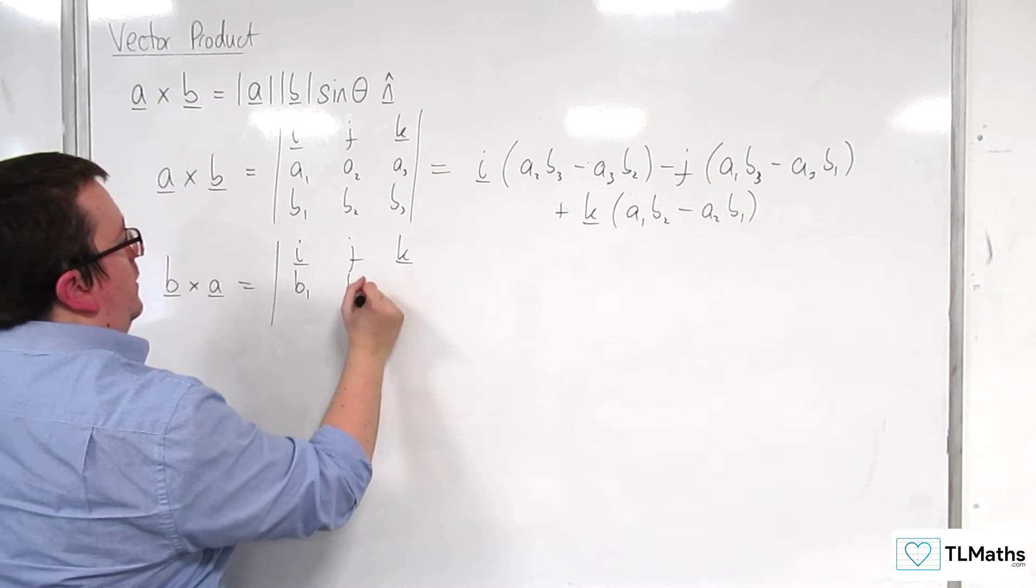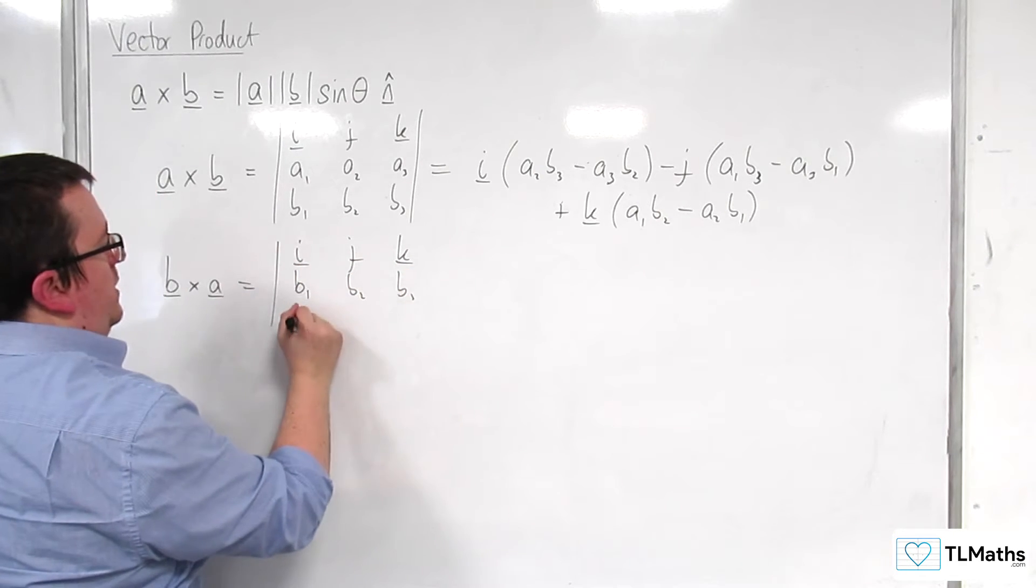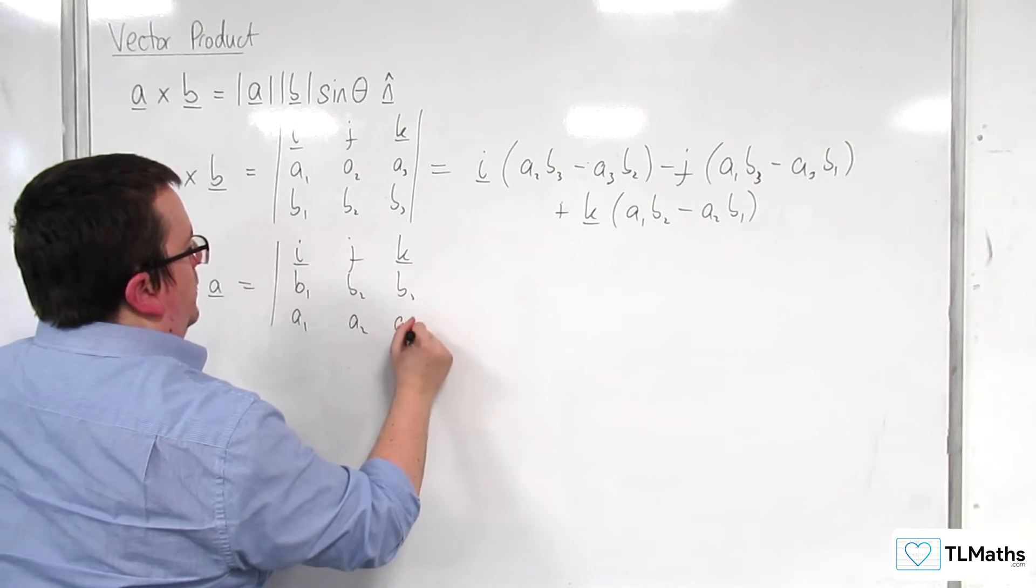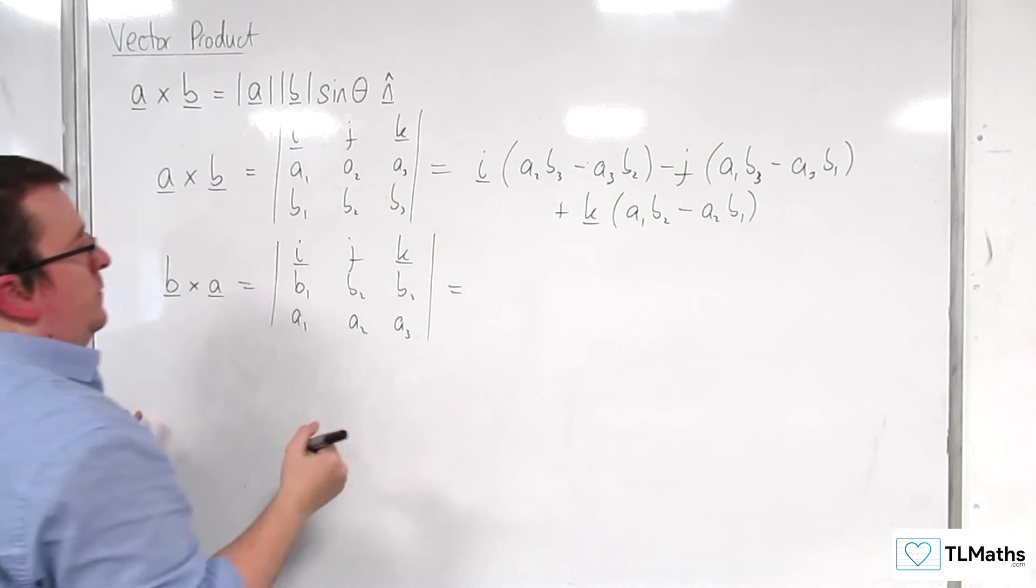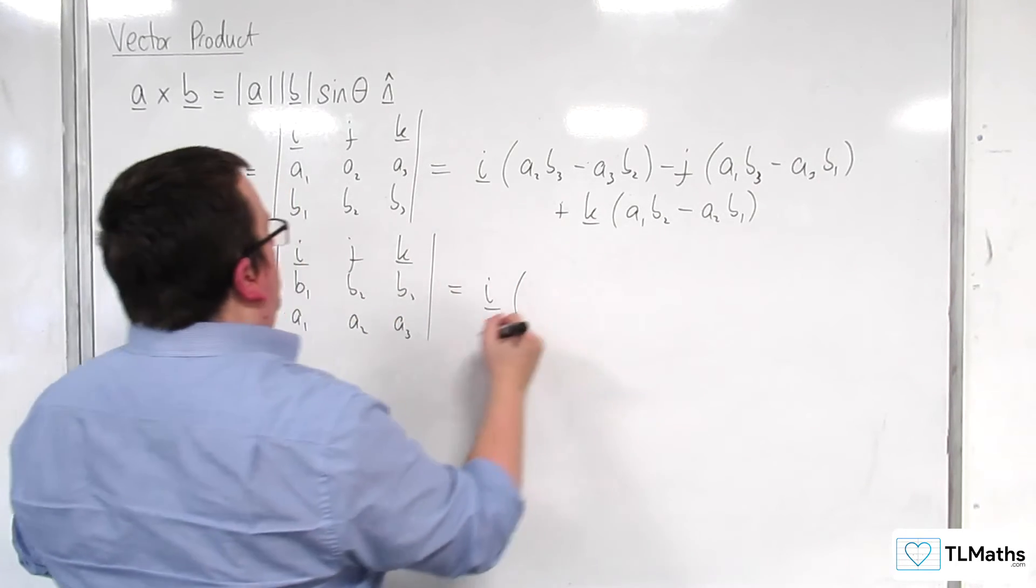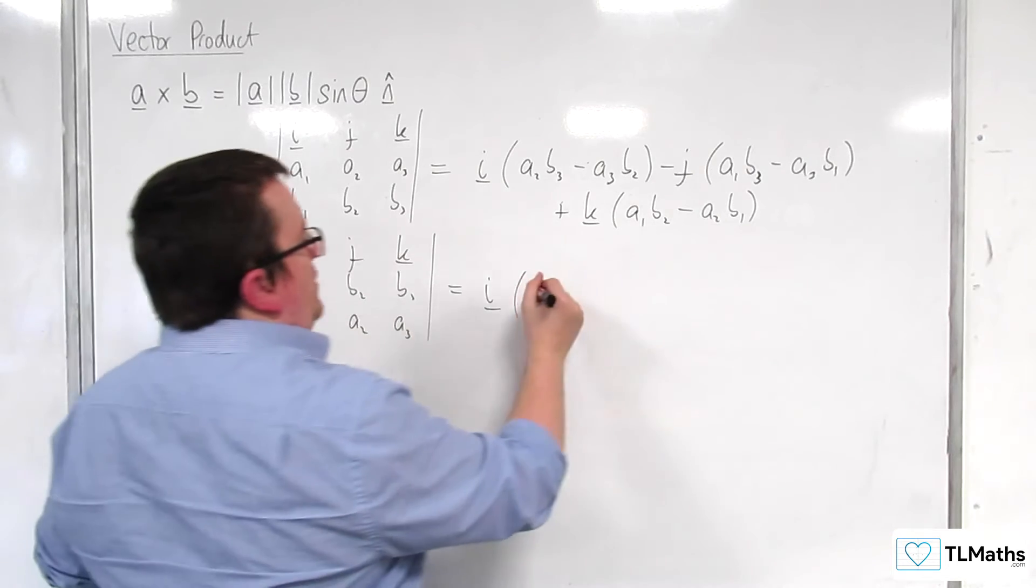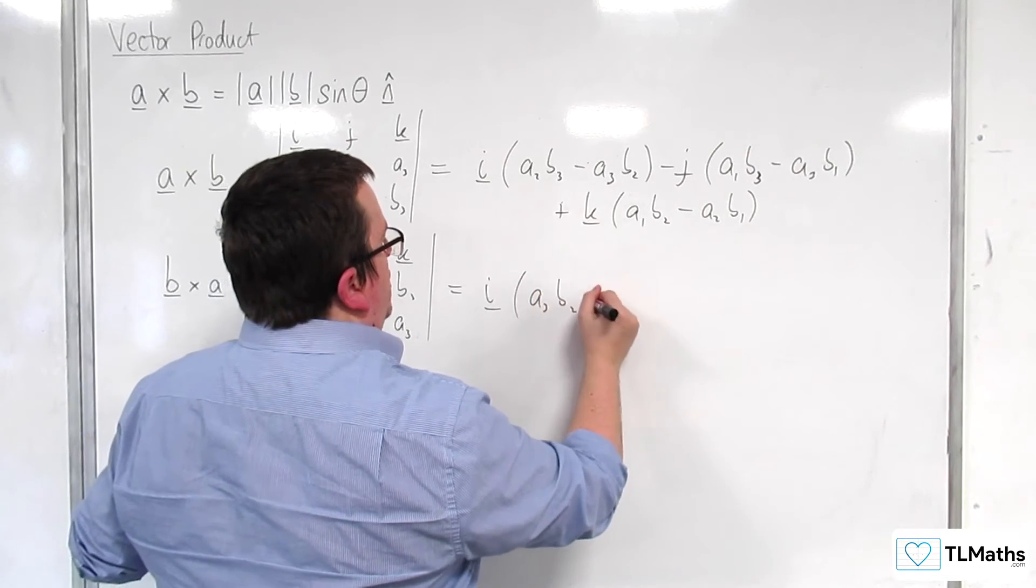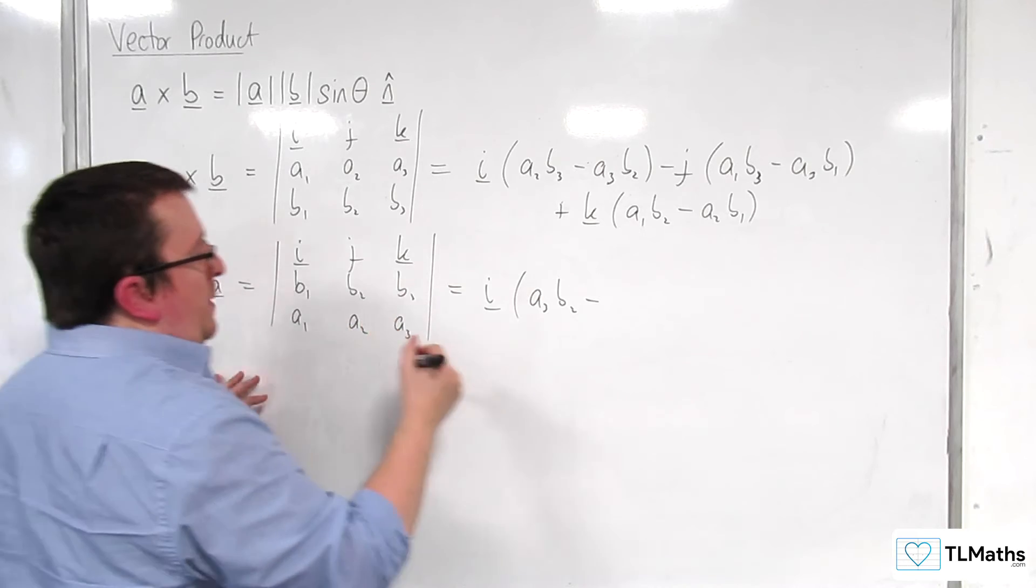So B1, B2, B3, A1, A2, A3, so we get I times B2 A3, so A3 B2, take away A2 B3,